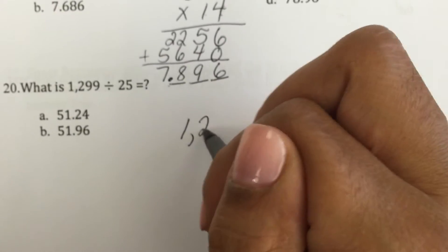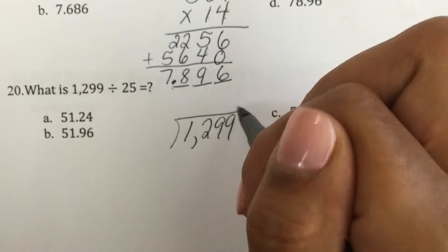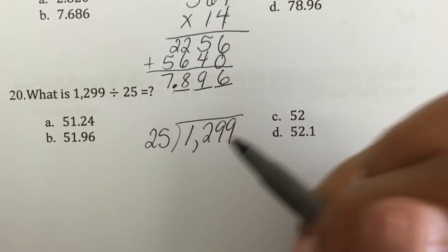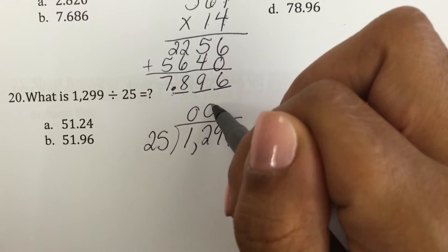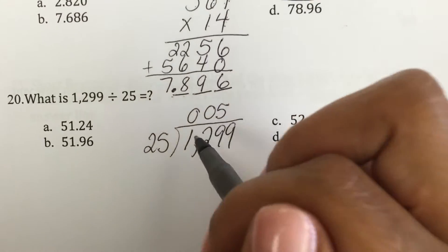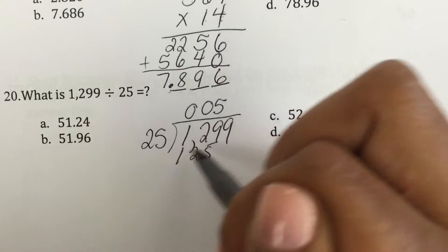Another division one. I gave you so much division today. Place value is important. 25 cannot go into 1. It cannot go into 12. But it can go into this number 5 times. 5 times 25 is 125.